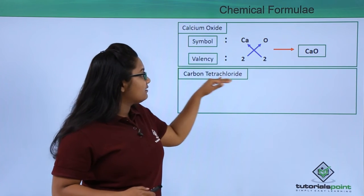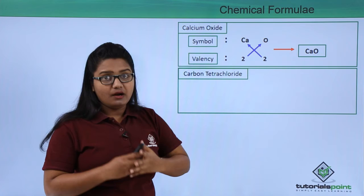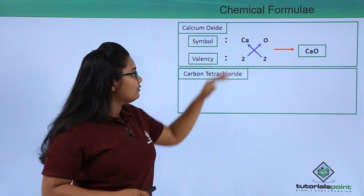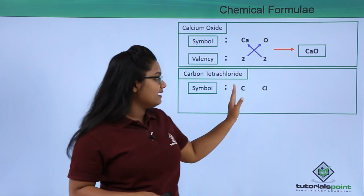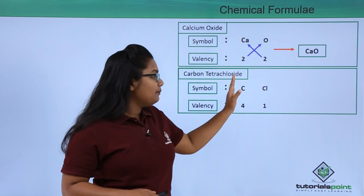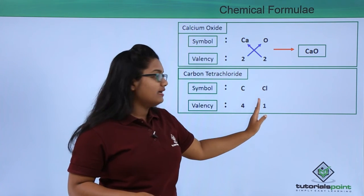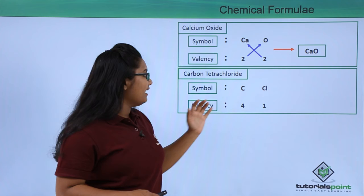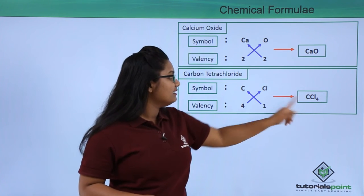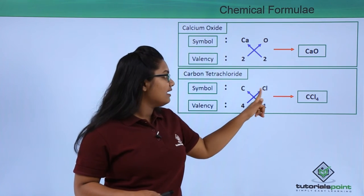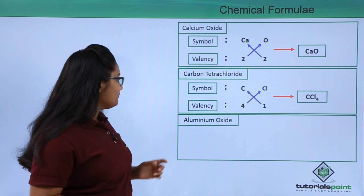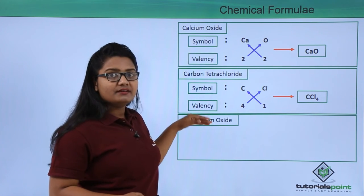For carbon tetrachloride, it contains carbon and chlorine. We write symbols C and Cl, with carbon having a valency of 4 and chlorine a valency of 1. Crossing over gives the formula CCl₄, since 4 goes to Cl and 1 goes to C.